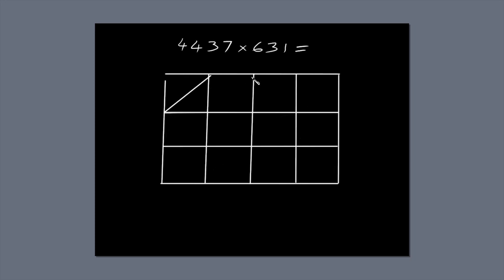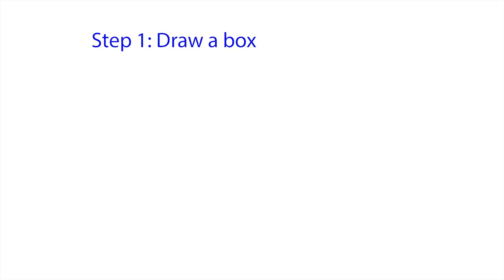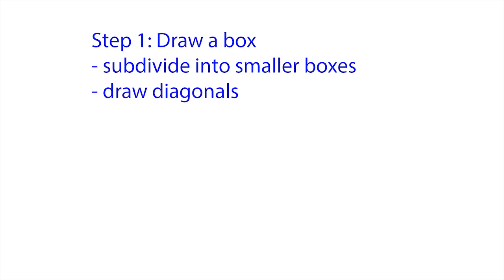Next, draw a diagonal line through each of the 12 small boxes. You might find you can draw a diagonal through more than one of the smaller boxes at a time. That's step one. Draw a box, subdivide it into smaller boxes and draw diagonals through them.